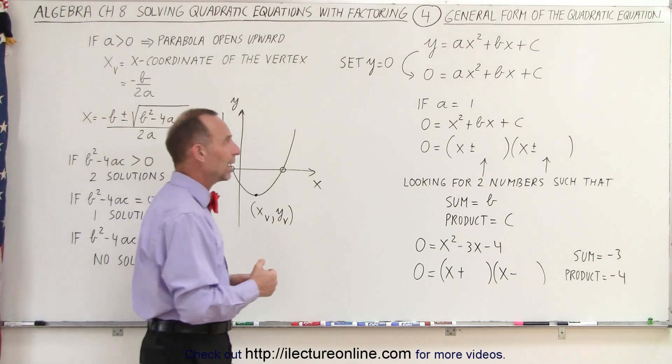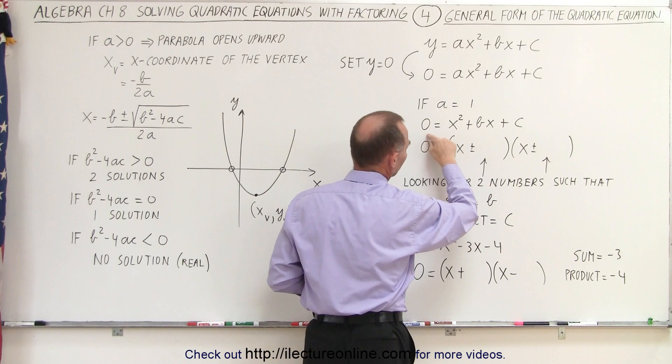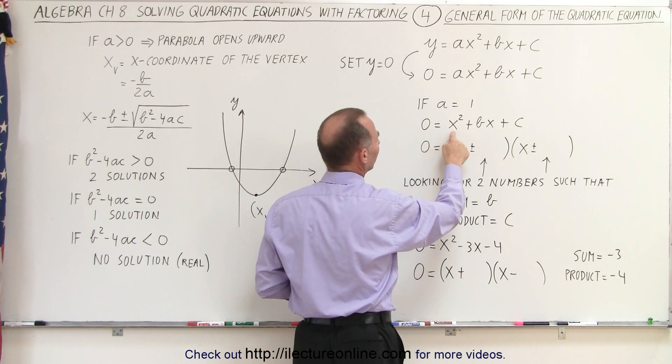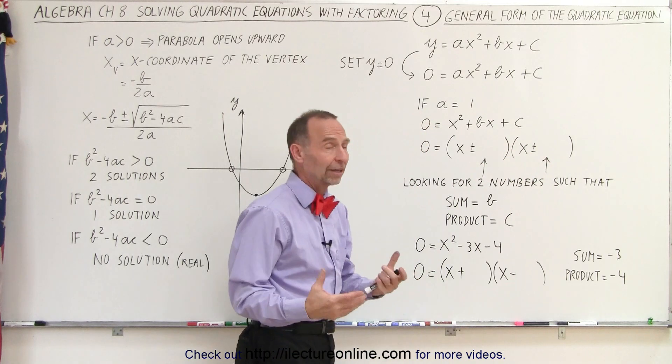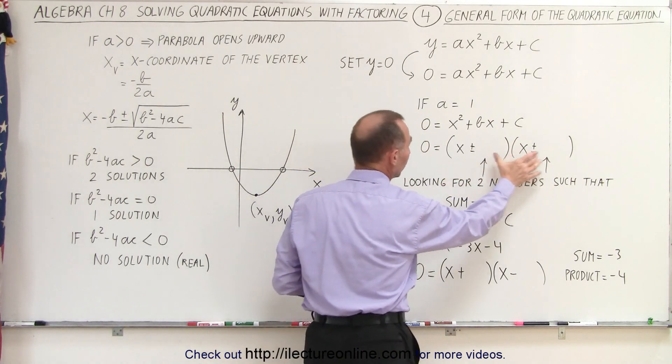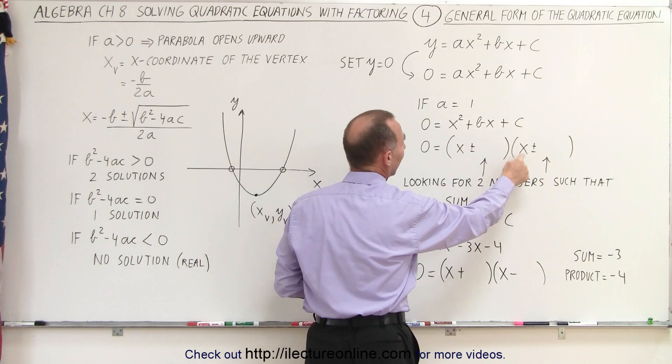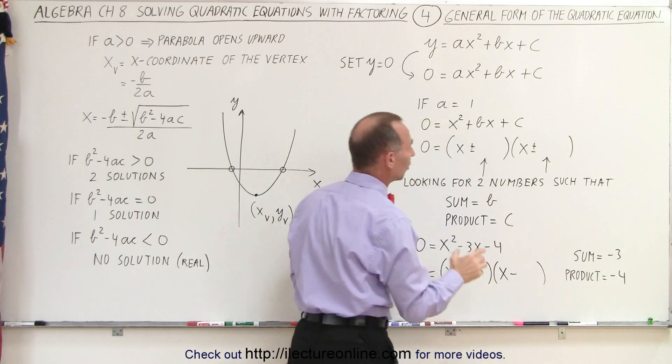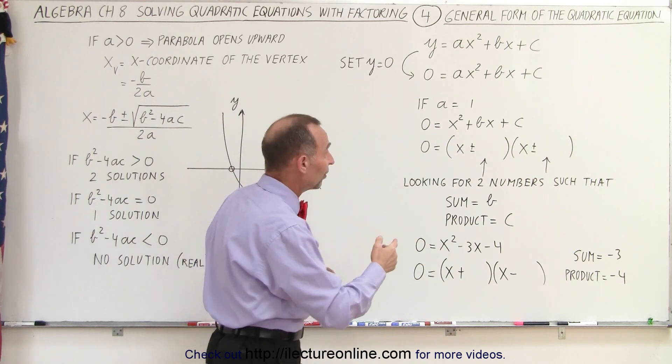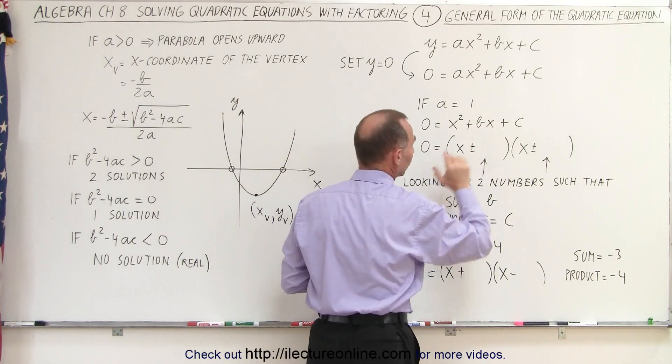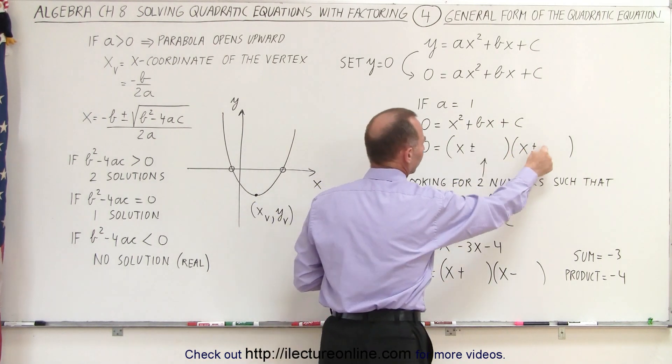So let's go back over here with the case where a equals 1. Our general equation looks like 0 equals x squared plus bx plus c, and now we're going to factor that. So the factored form will be two binomials multiplied together, where we have x plus or minus some constant and x plus or minus some constant. Of course, the signs will depend upon the signs of these numbers right here, and we'll get into more detail later. Now we're looking for two numbers to put in here.